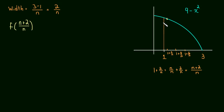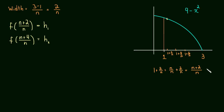If this is the x value, f of that value gives us the first height — the height of rectangle 1, h₁. Then f of n plus 4 over n is going to be the height of rectangle 2. Because n over n plus 4 over n is n plus 4 over n. And f of n plus 6 over n is the height of rectangle 3.